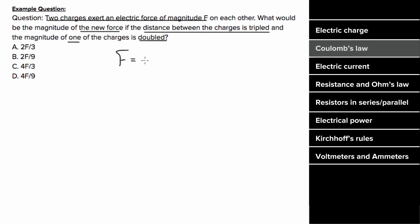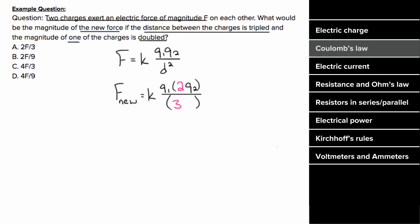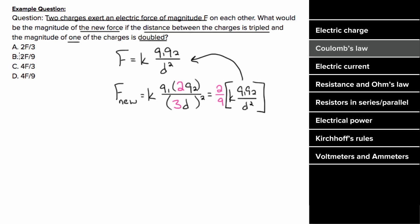We know the formula for Coulomb's Law says that the force between two charges is the electric constant times one of the charges, times the other charge, divided by the distance between them squared. Once we triple the distance and double a charge, the new electric force is gonna be K times one of the charges, multiplied by two times one of the charges, divided by three times the distance, which is squared. So I'm gonna get a factor of two on top, and this three will get squared, giving me a factor of nine on the bottom. If I pull out those extra factors, I get that the new force is two ninths, multiplied by KQ1Q2 over D squared, but this entire quantity was just the old force F. So the new force is gonna be two ninths of the old force.